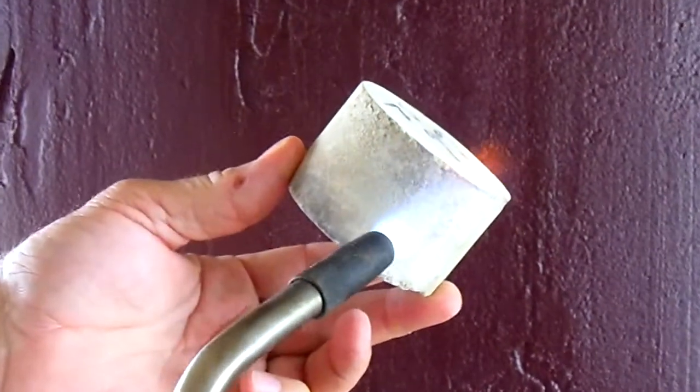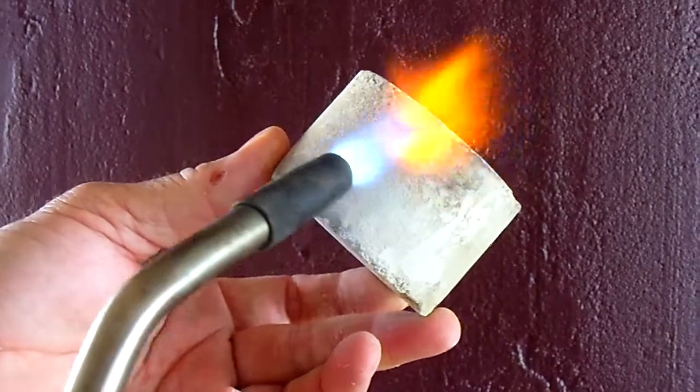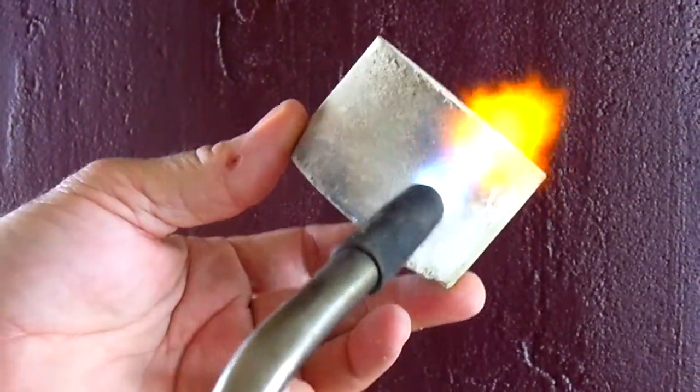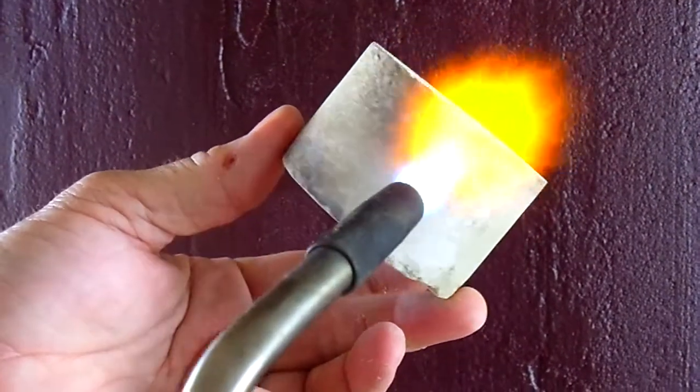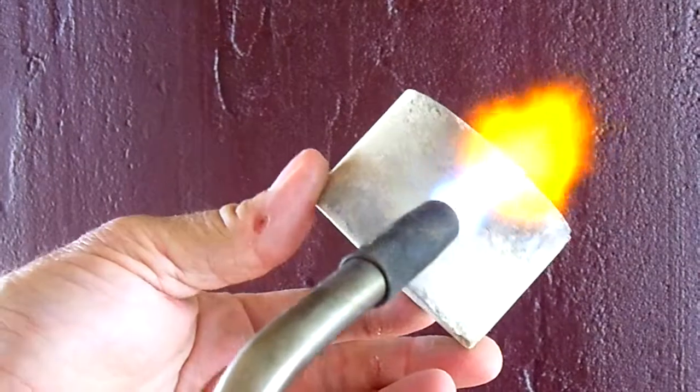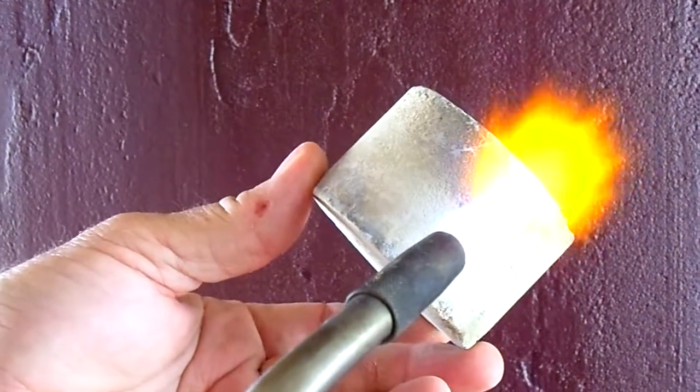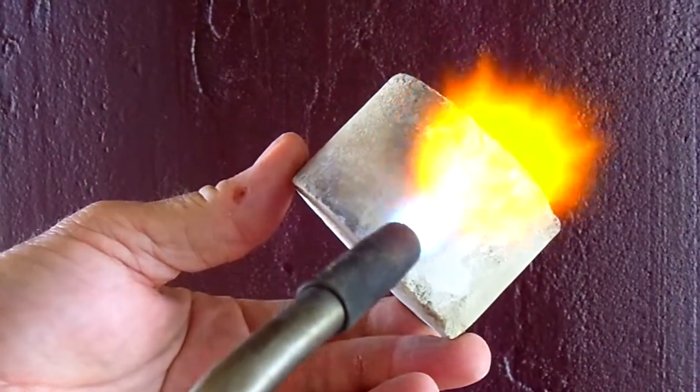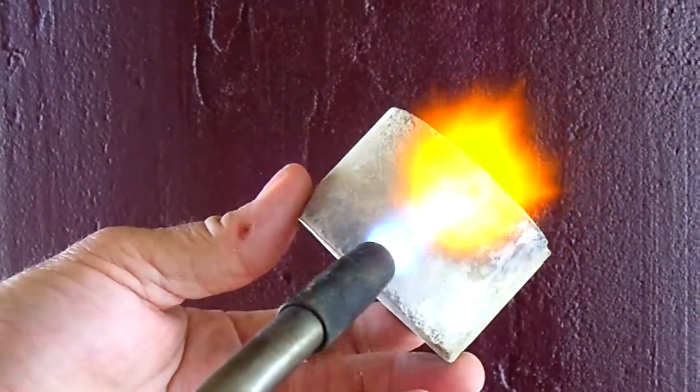But for right now, just the insulating value of it. I'm holding it with my hand, obviously. This is a map gas torch, so it's going on towards 2,500, 2,600 degrees. You can see what a good insulator the material is. It's got like an R-75 insulating value.